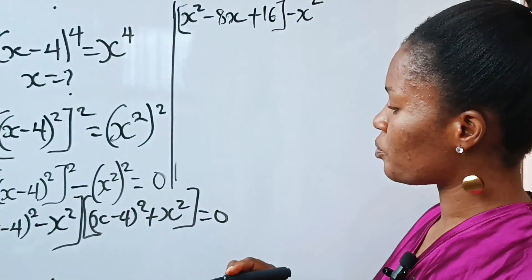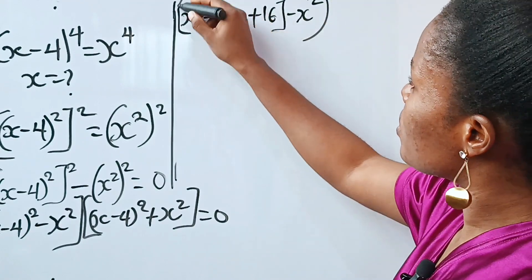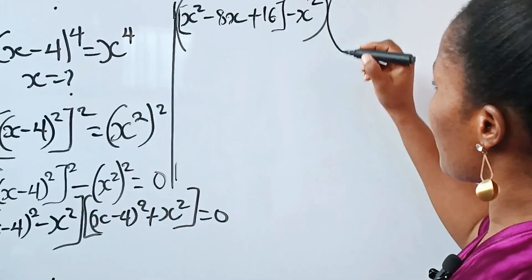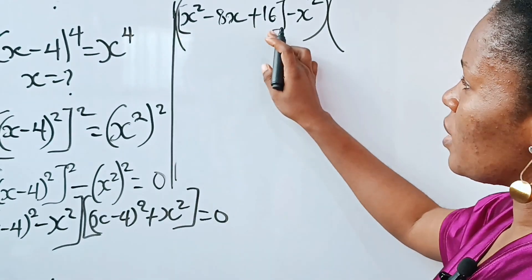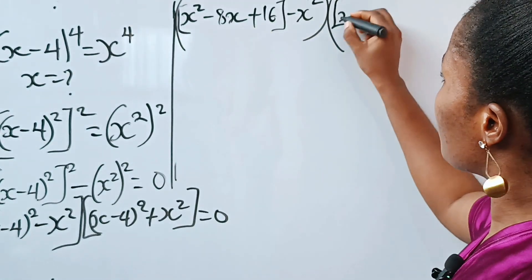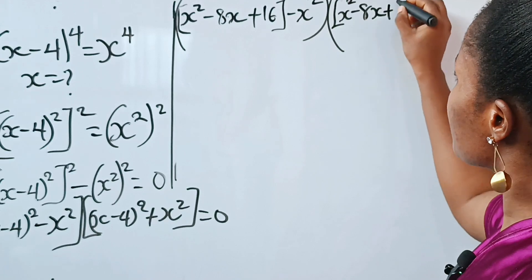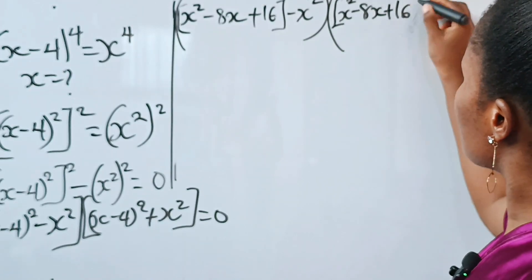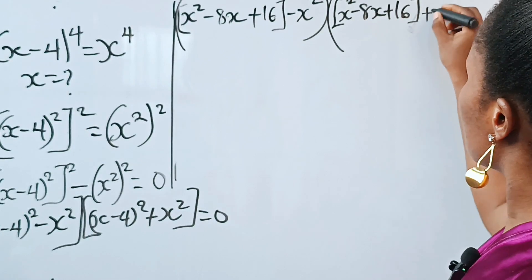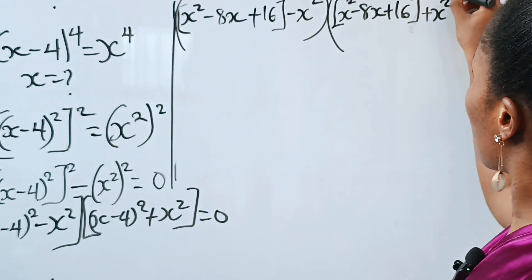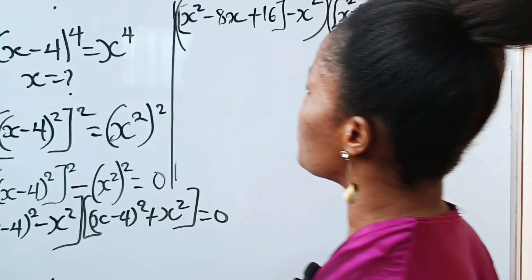So that expansion gives us x squared minus 8x plus 16, and we subtract x squared. This is multiplied by the second bracket, which since it's the same form, we copy: x squared minus 8x plus 16, this time plus x squared. Everything is equal to 0.